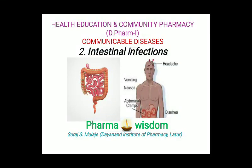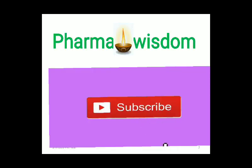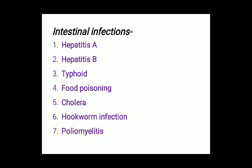Hello students, I welcome you all to my YouTube channel Pharma Wisdom. In today's presentation we are going to cover the second part of communicable diseases, that is intestinal infections. There are seven intestinal infections included in your syllabus: first is Hepatitis A, second is Hepatitis B, third is Typhoid, fourth is Food Poisoning, fifth is Cholera, sixth is Hookworm Infection, and seventh is Poliomyelitis.